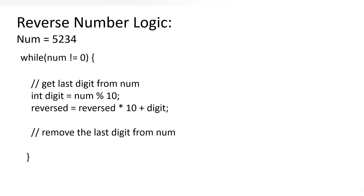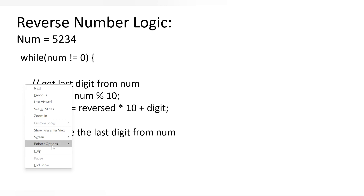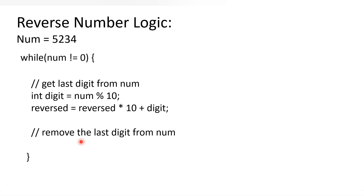For the reverse number logic, we use a while loop with three statements inside. Let's say our number is 5234. First, we get the unit digit: num modulo 10 gives us the remainder, which is 4. We store this in a variable called digit. We also declare a variable called reverse, initially set to zero.